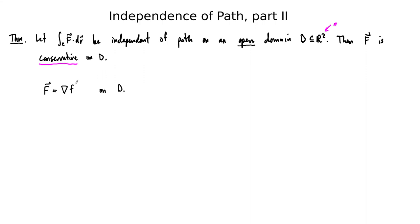If we start with a conservative vector field, then we know that it's independent of path. So you could reframe this theorem as an if and only if, and in the notes I actually do that. But for the sake of this lecture video, we're just going to prove one direction — the direction where we want to prove that f is conservative, given the fact that the path integral is independent of path.